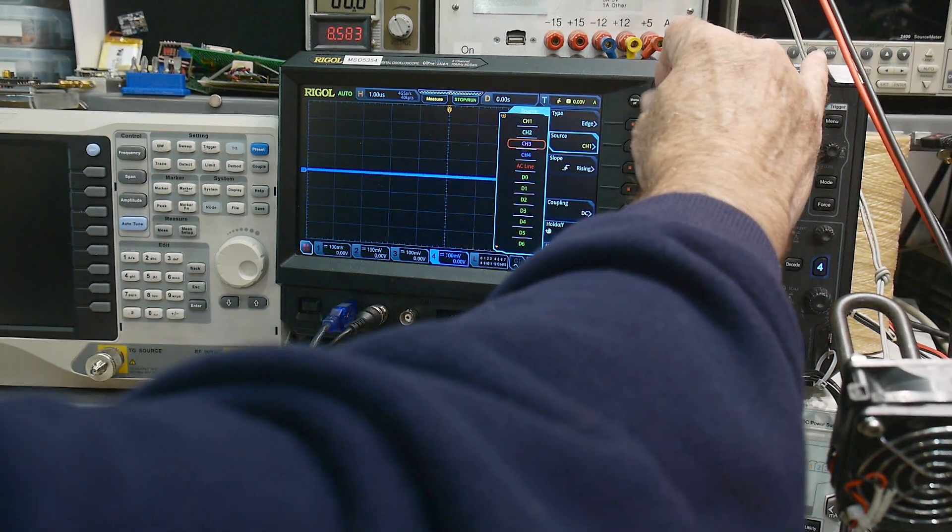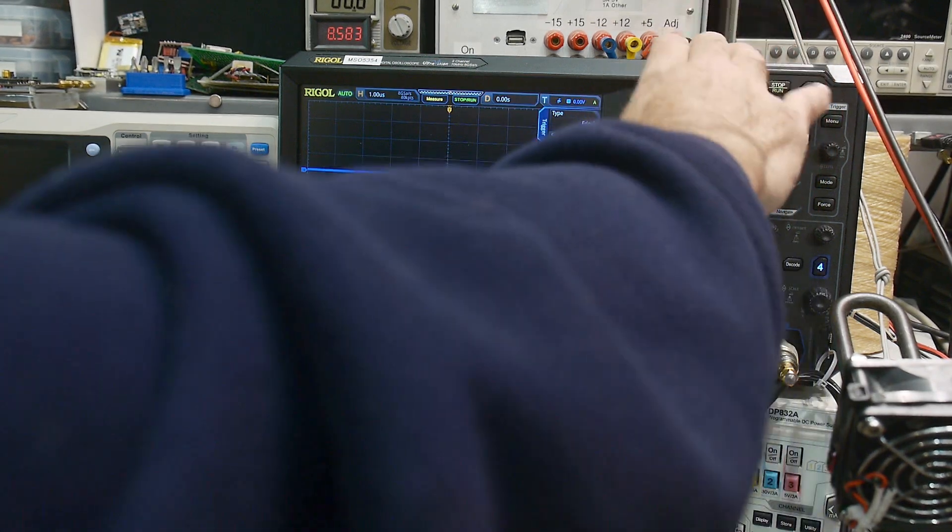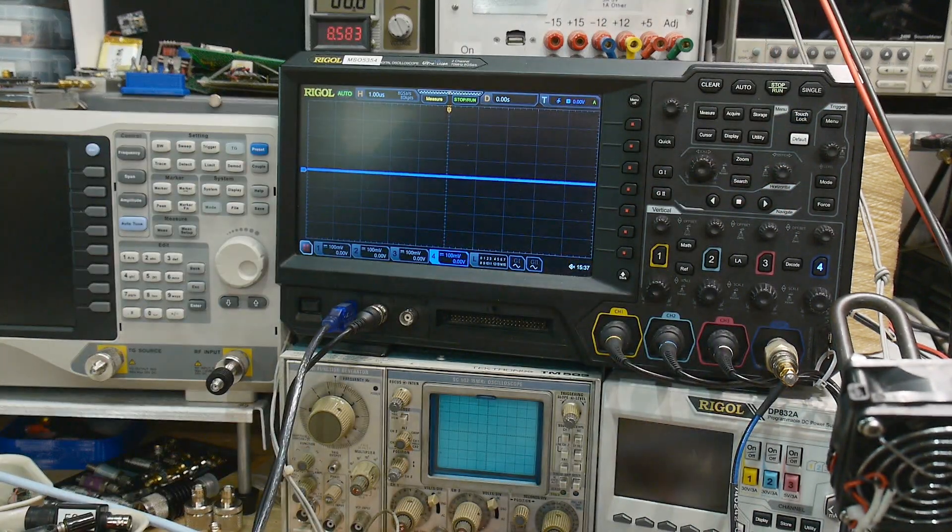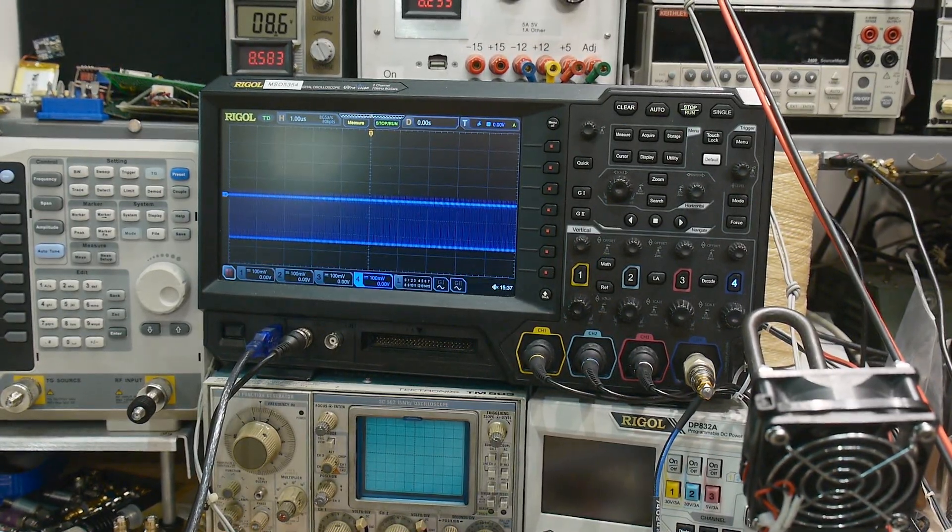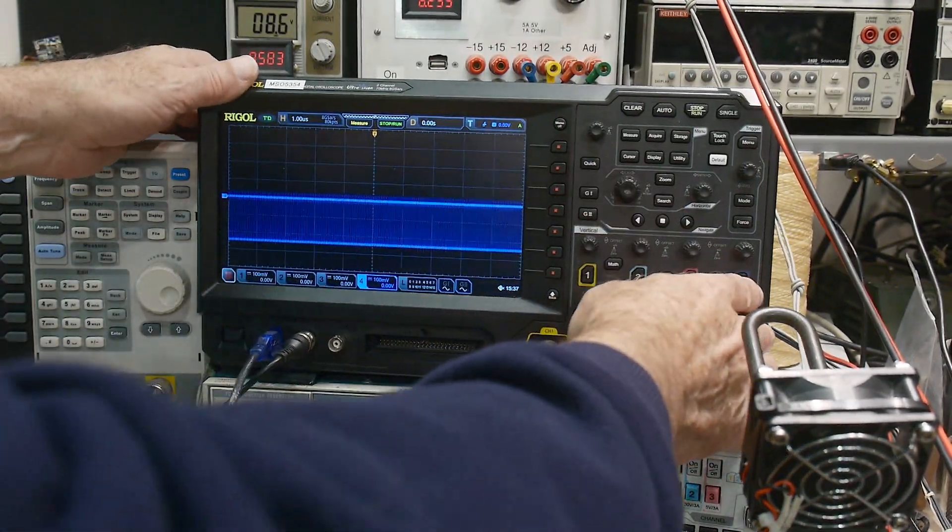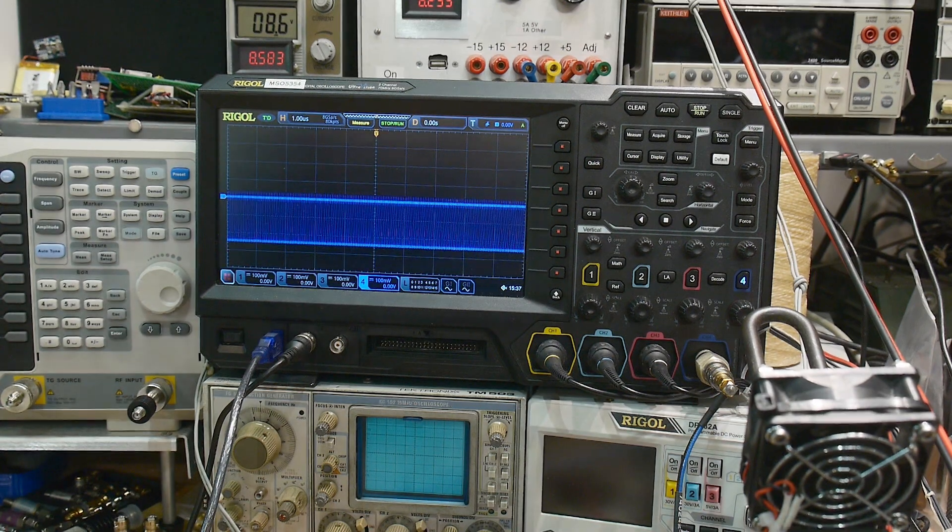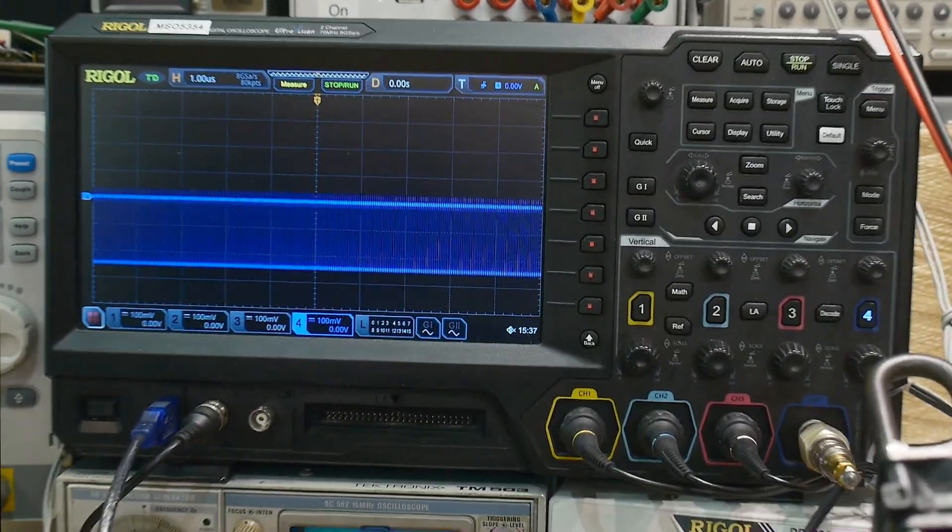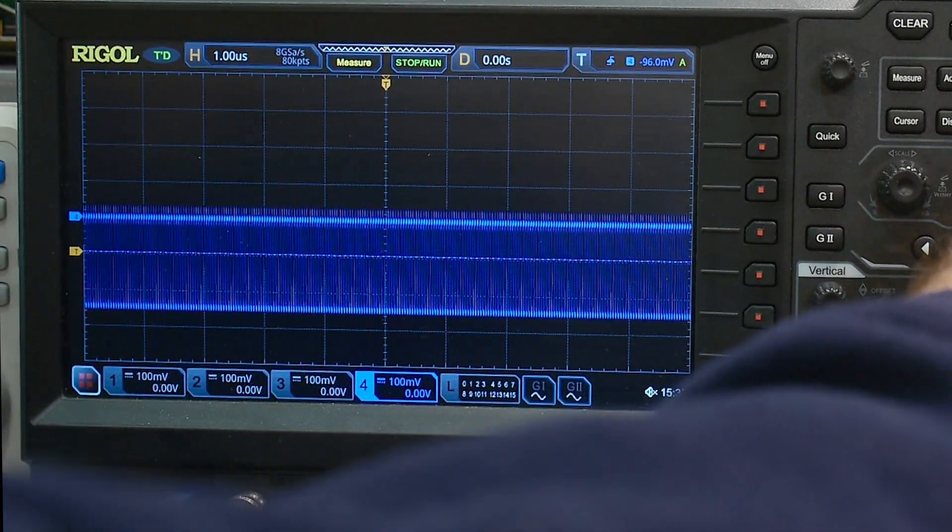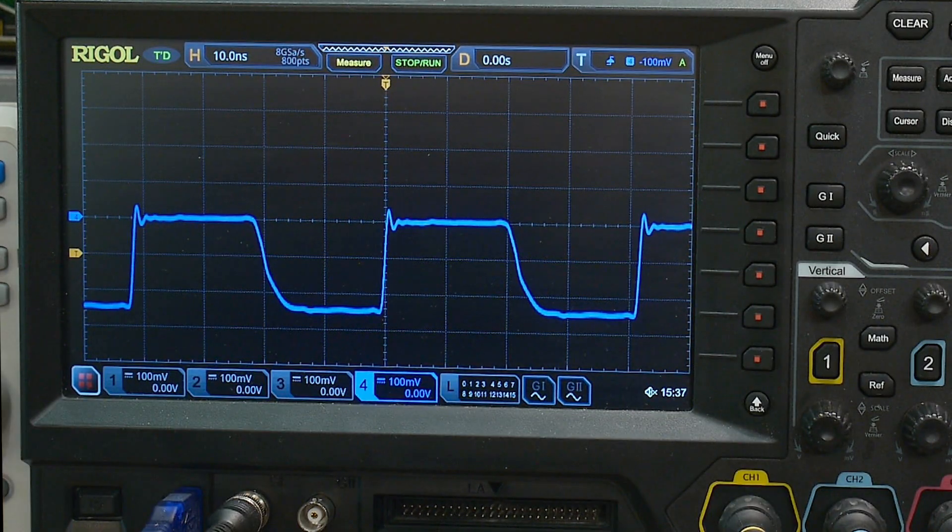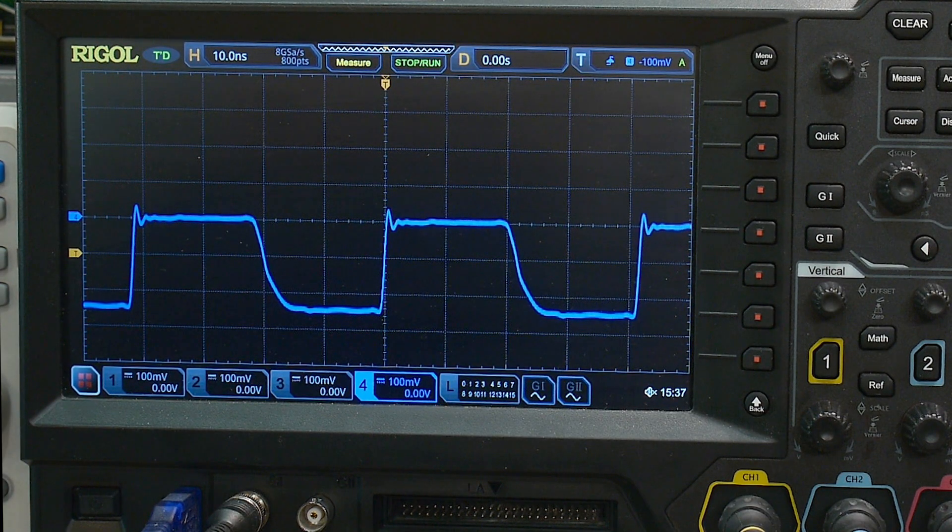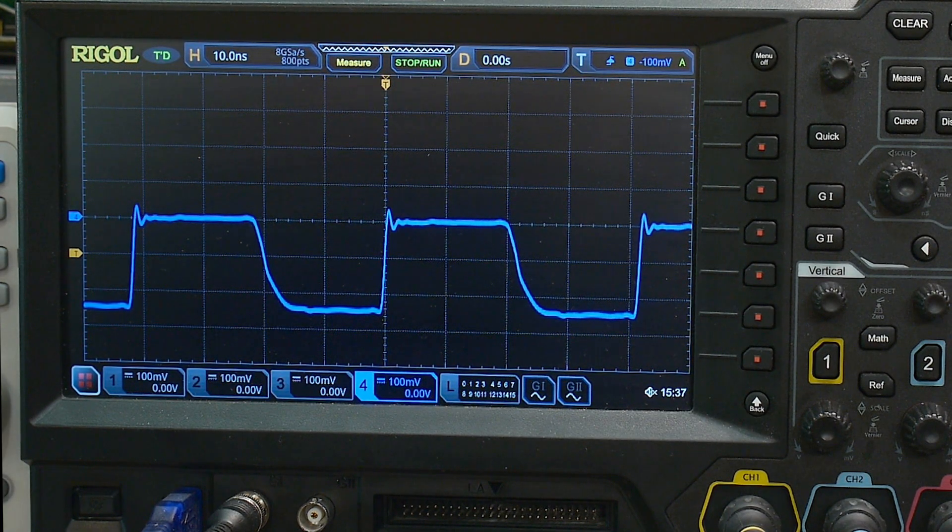Once again it's USB powered, so we will turn it on. Let's see if I can get that glare off of it. There we go. All right, so there's obviously something happening. We'll need to trigger on it and zoom in. There we go, so it does have a fast rise time and a slower fall time, just like the instruction manual says.